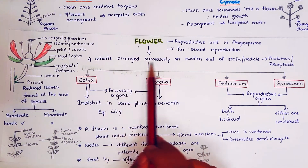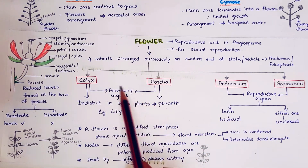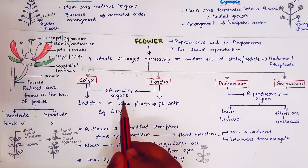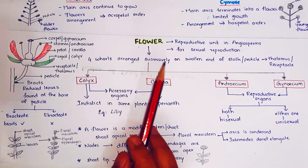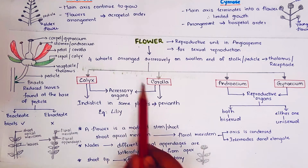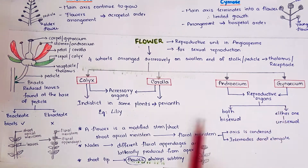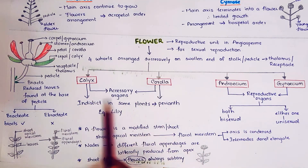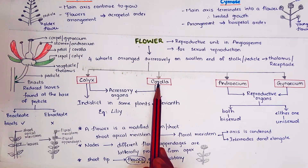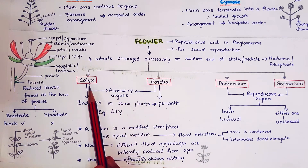The four floral appendages of a flower are calyx, corolla, androecium, and gynoecium. Calyx and corolla are called accessory organs, while androecium and gynoecium are reproductive organs. Accessory organs assist in the main function of reproduction. In some plants, calyx and corolla are indistinct and together called perianth — they are not differentiated in perianth. An example of perianth is lily; in lily, we cannot differentiate calyx and corolla.